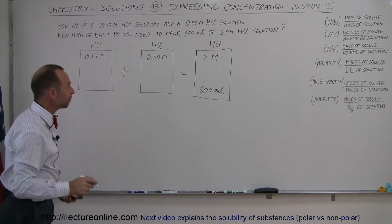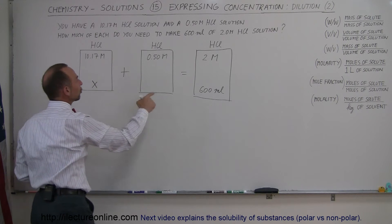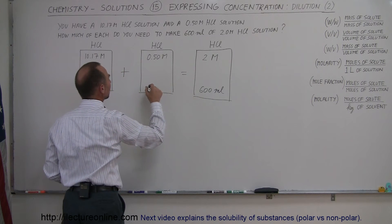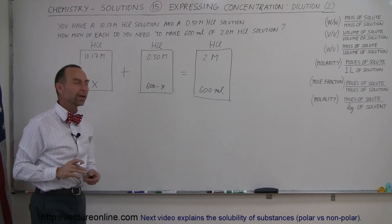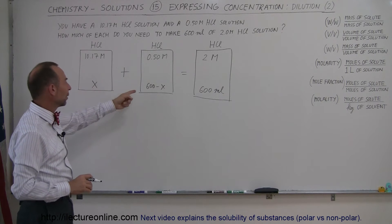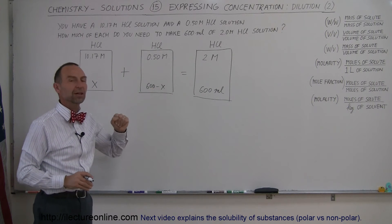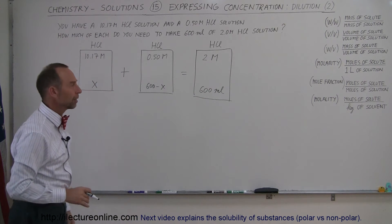So how much of each do we need? Well, if we say that we need x amount of this solution, then we'll need the total minus x of this solution. So 600 minus x of this solution. That works out quite nicely. So if we say we need x of this, let's say if x is 100, then we'll need 600 minus 100, 500 of this. Just as an example because we know the total needs to be 600 milliliters.